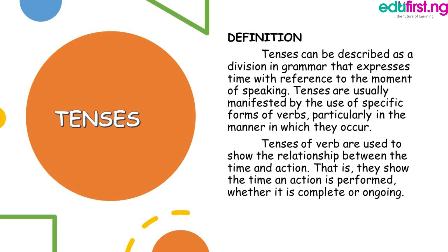So in other words, from the definition here, we could see that tenses can be described as a division in grammar that expresses time with reference to the moment of speaking. Tenses are usually manifested by the use of specific forms of verb, particularly in the manner in which they occur. Tenses deal with verbs pertaining to time, like 'I am eating' — a present continuous statement — meaning I am eating right now. They show the time of action when it's performed, whether it's a complete action or it's ongoing.